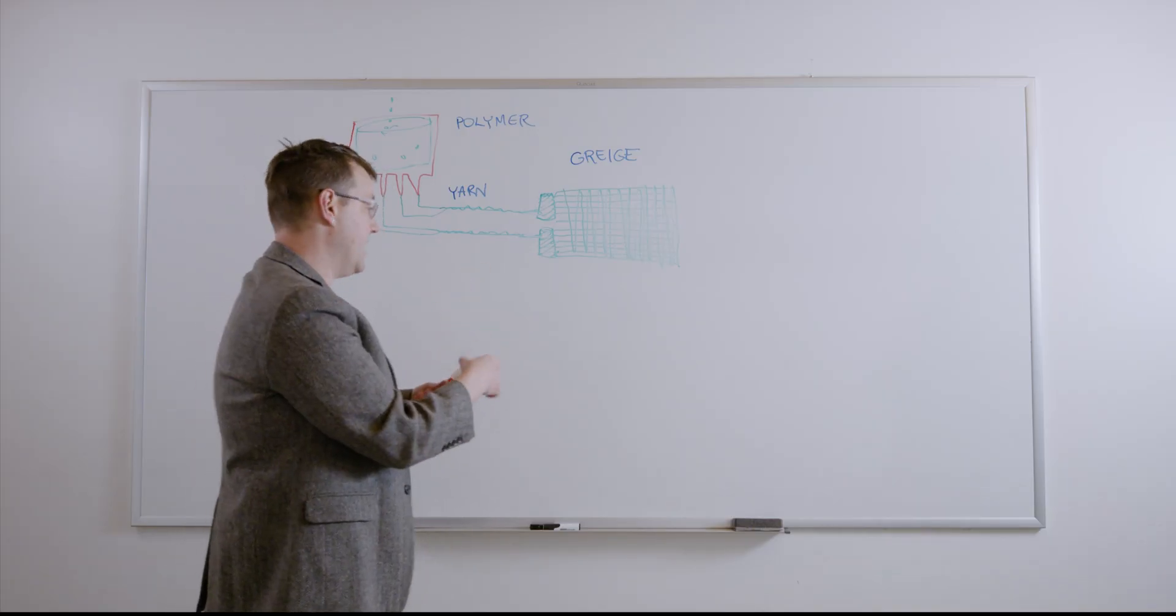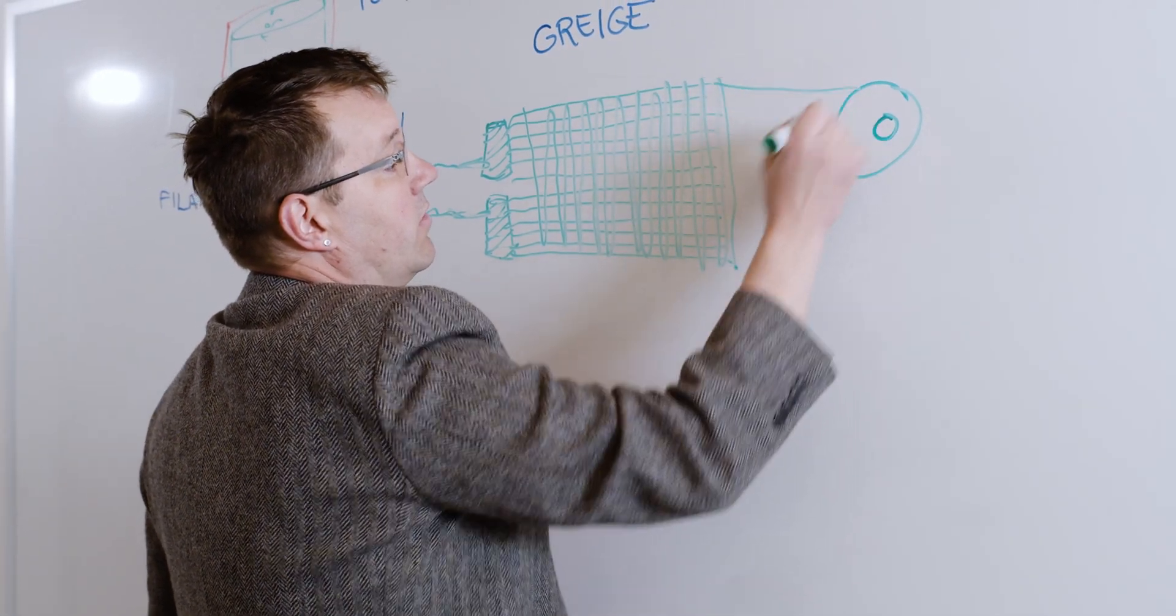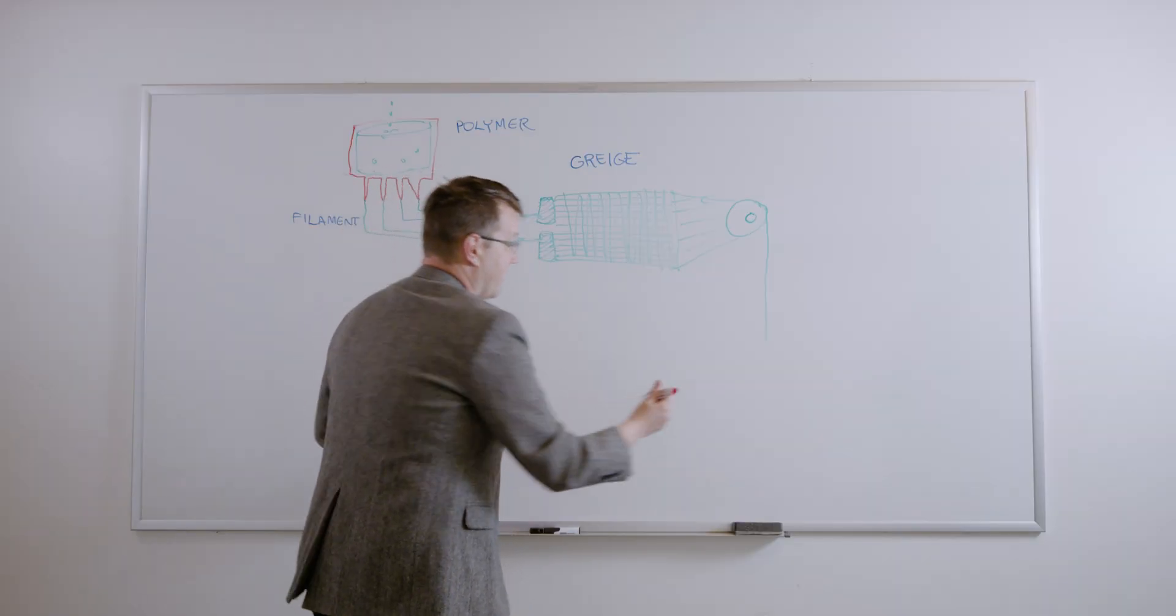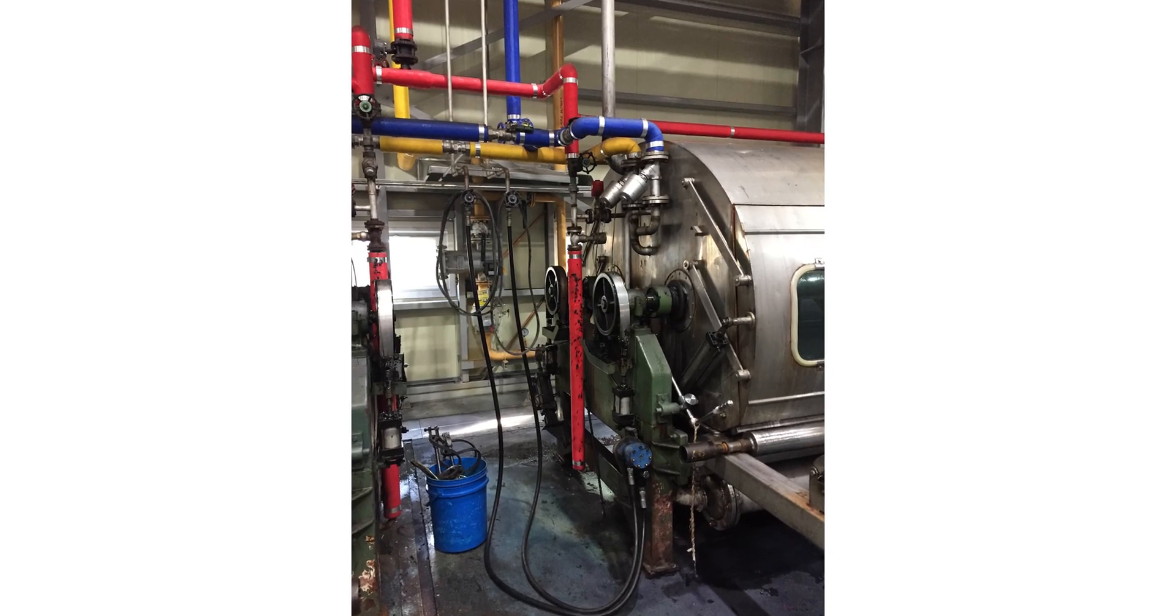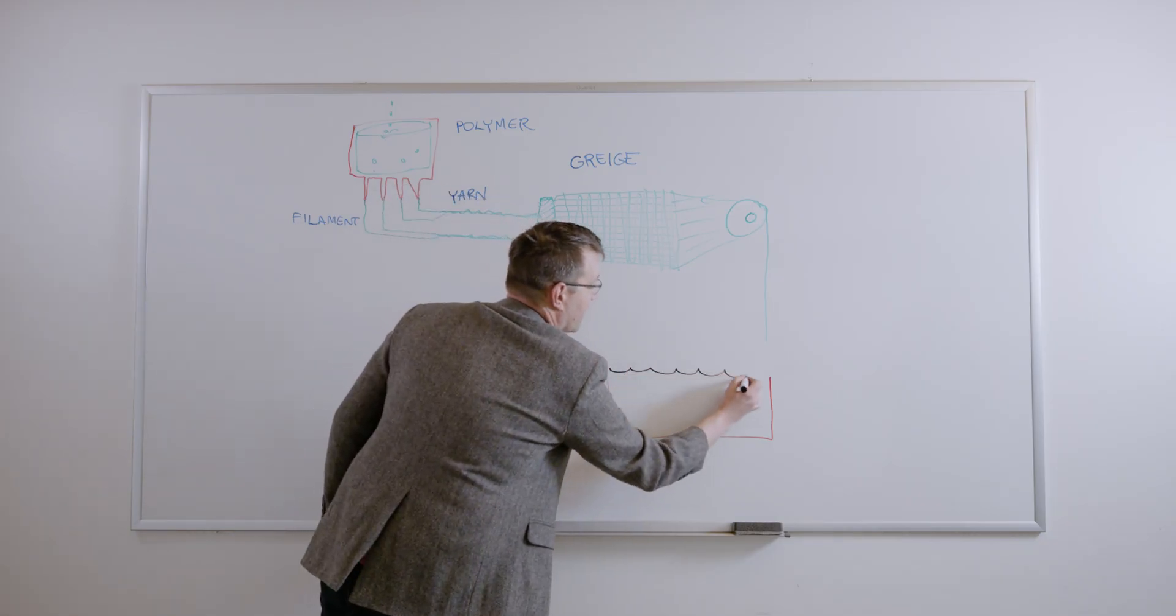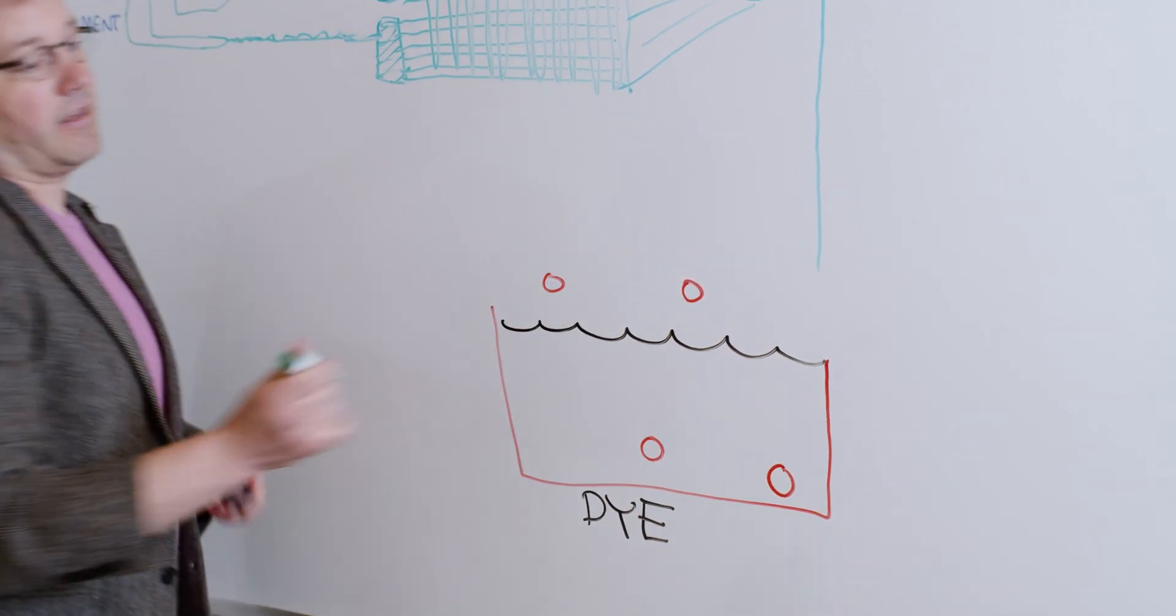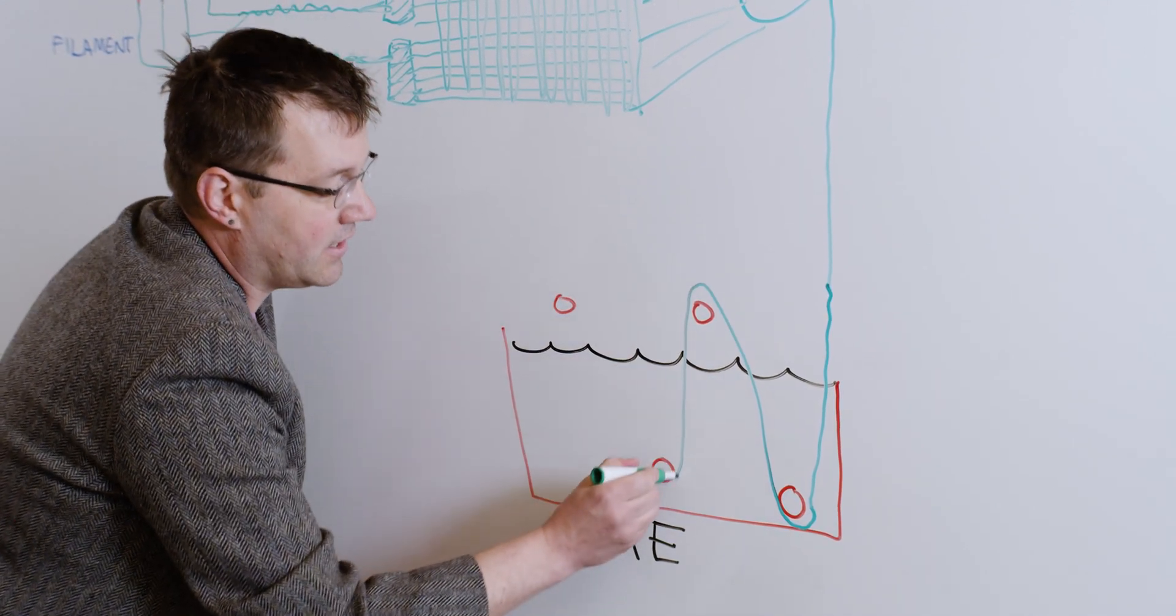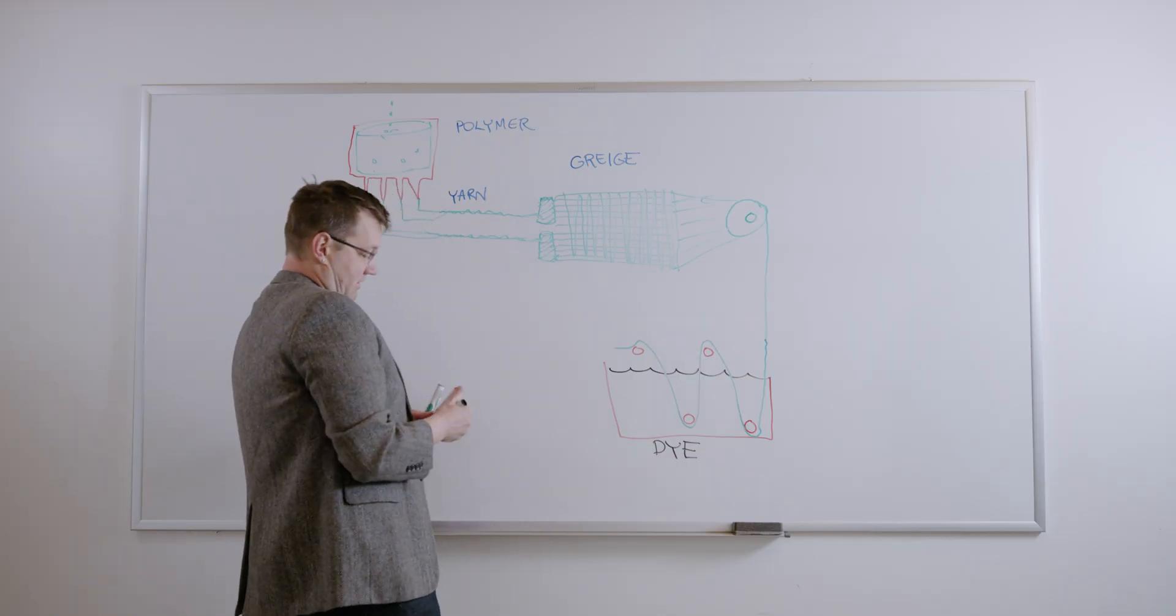So now this greige is undyed and needs to be dyed. We're just going to kind of imagine a big roll with textile here that goes into the first step - the dye bath. We're going to have a huge vat with a couple of rollers. This fabric, there's a few different dye processes, but basically this fabric is going to wash in and out and in and out of this dye bath to color it black. So at this point our fabric is dyed black.